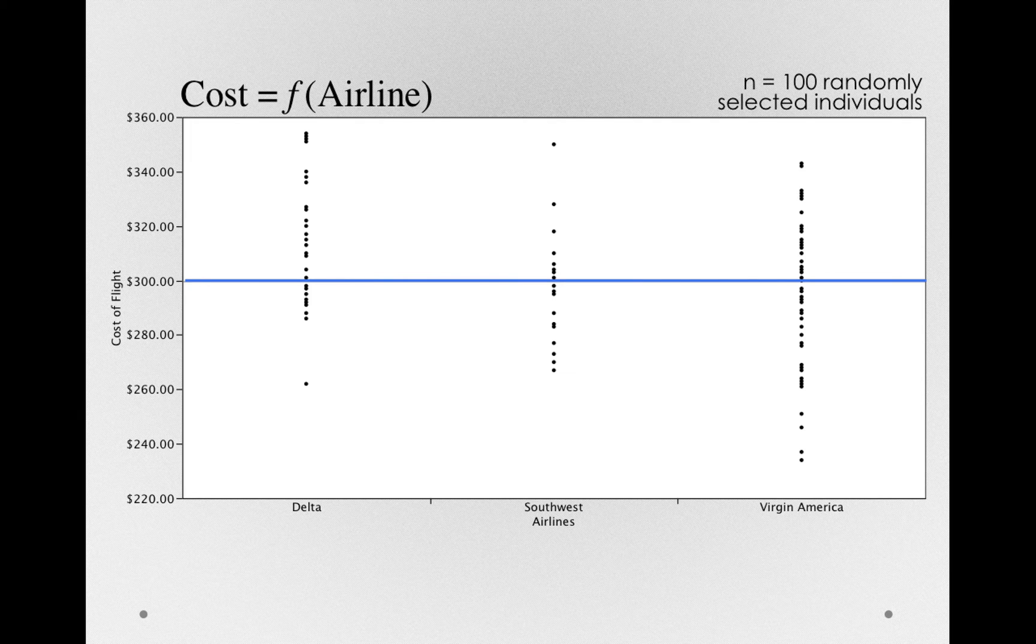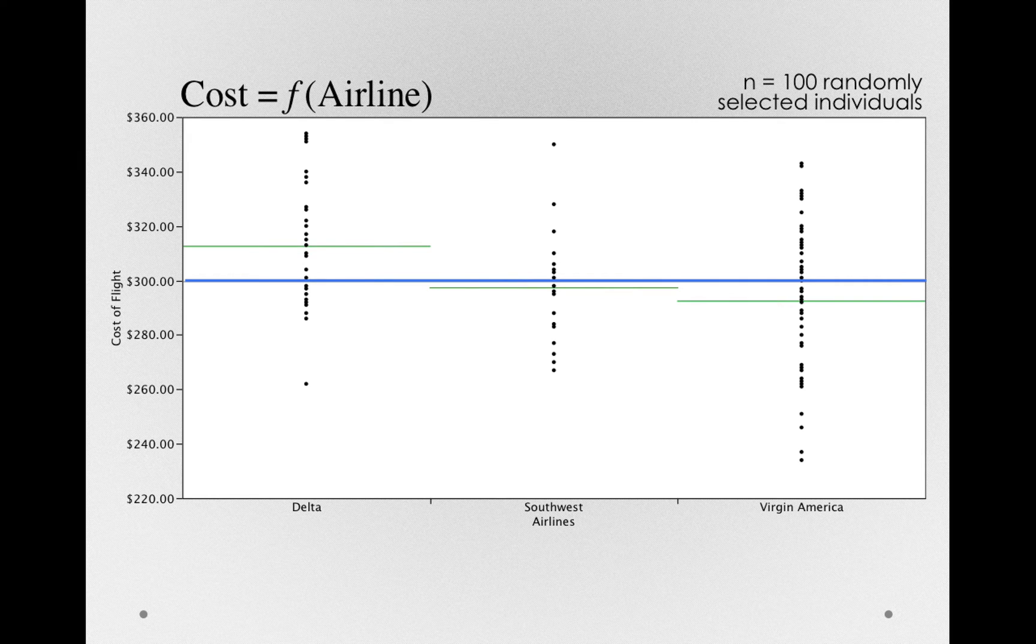In this case, we can see that there are differences between these airlines in terms of the average cost. I have in blue here the overall average, and let me add in the averages for each of these groups. We can see that Delta is a little bit above average, Southwest Airlines a little bit below that average, and Virgin America a little bit below that average.